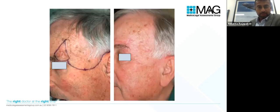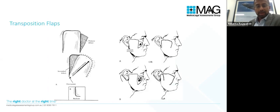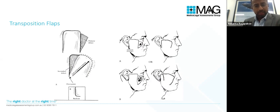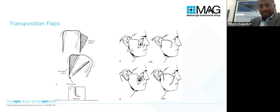A classic example is a defect over the lateral upper eyebrow where a rotation flap is fashioned based on existing lax tissue in the surrounding area. Transposition flaps are a variation — a more rectangular piece of tissue rotating around a pivot point, sometimes with back cuts to facilitate motion. Excess tissue easily available in the posterior ear and neck area can be brought forward to achieve a tensionless closure, which is critical for good scarring.